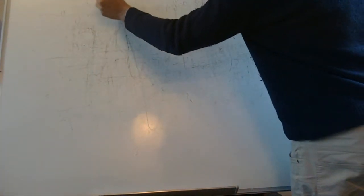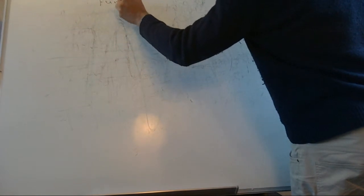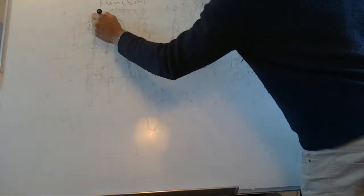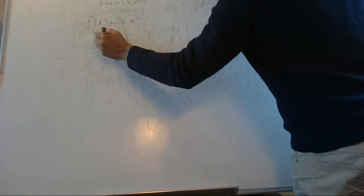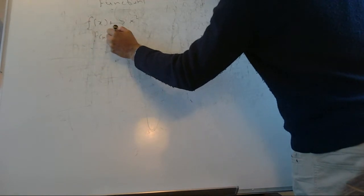Okay, so here we're going to do functions. A function is something like this: we have f of x maps to x squared, which can be written as f of x equals x squared.